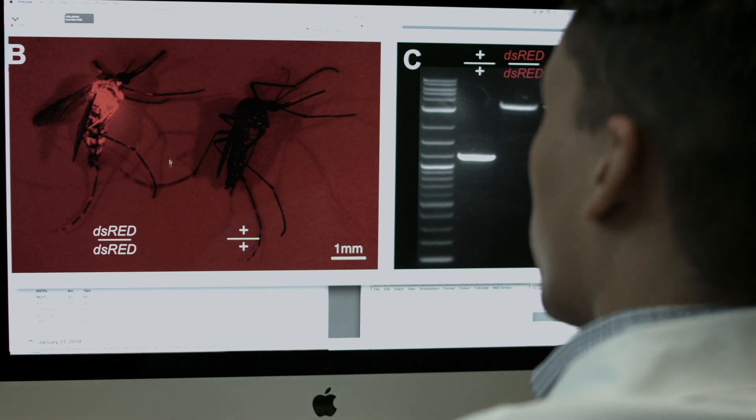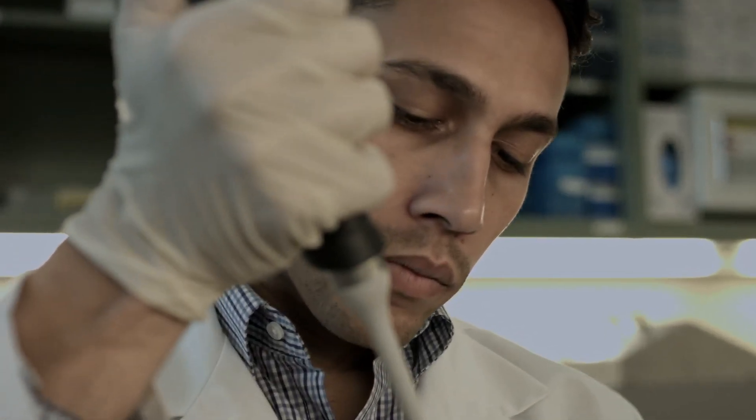Here we can see that the DsRed was inserted into the gene, and we can tell by the red fluorescence compared to the wild type. So we also did the same thing in exon 3, but we introduced an attP site. The attP site is a recombination site that we can use later on to integrate other transgenes for further application.